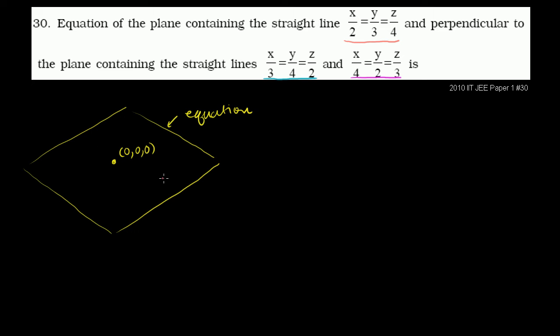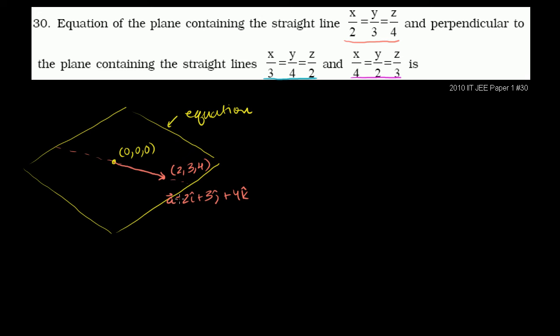So this line goes through both points. If we wanted to think about a vector that this plane contains, it would be the vector from (0,0,0) to (2,3,4) — which is the position vector (2,3,4). Writing it in unit vector notation: vector a = 2i + 3j + 4k. I'll call this vector a.